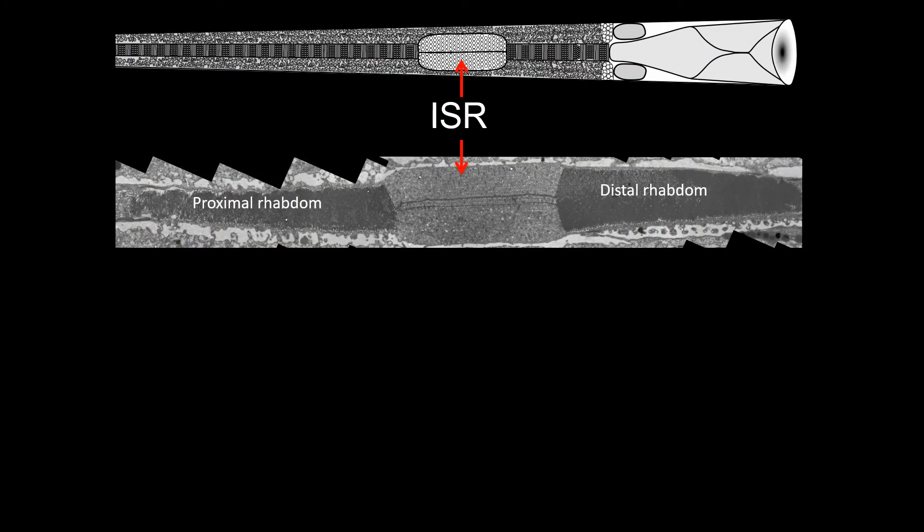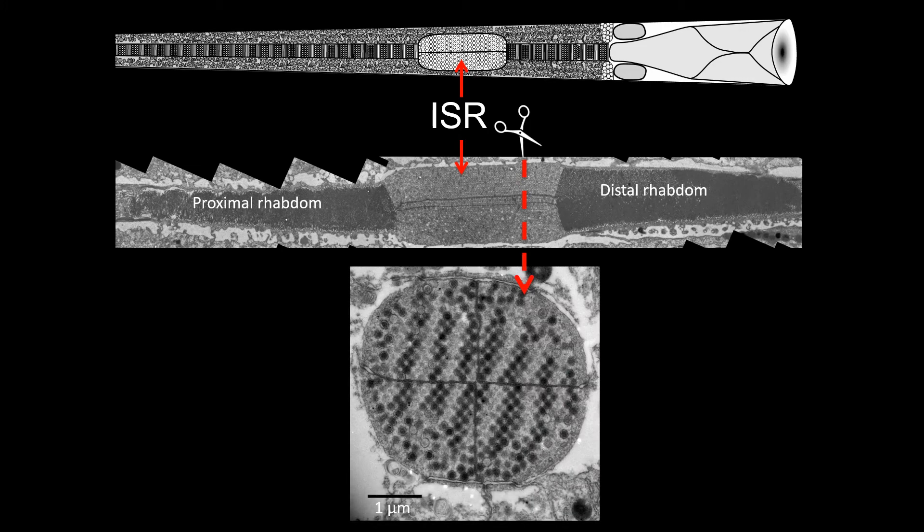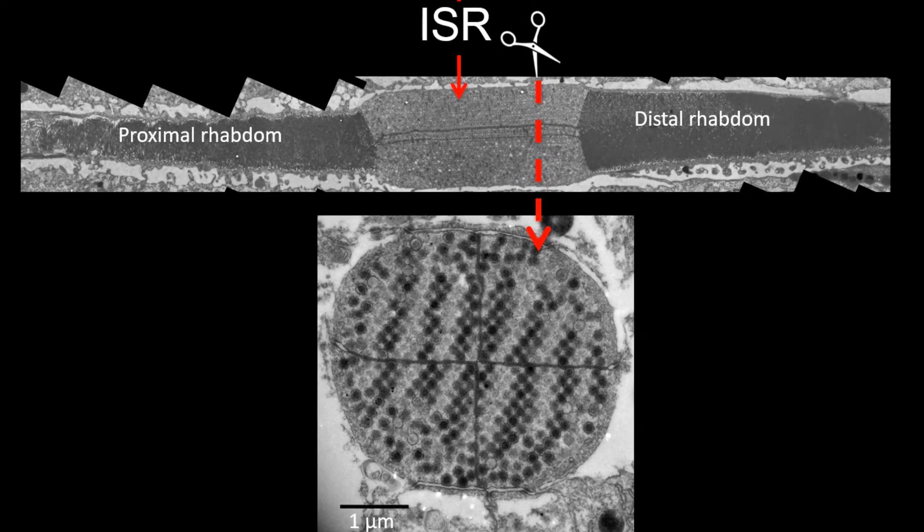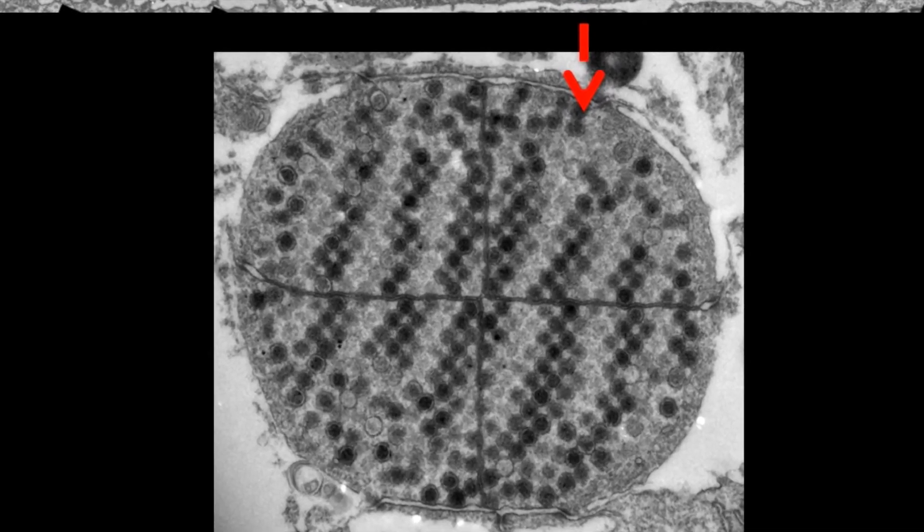Transmission electron microscopy, or TEM, revealed that the ISR is a four-part barrel-shaped structure full of hundreds of small round units called vesicles, each about 152 nanometers in diameter, which is the perfect size for interacting with wavelengths of visible light.